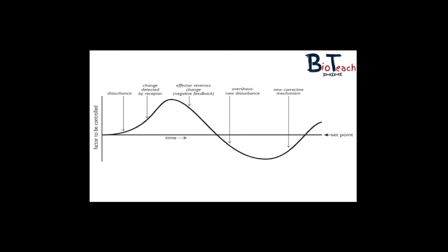The next part of the graph where it goes below the set point would be an example of, say, you woke up and skipped breakfast. This disturbance would essentially be your blood sugar lowering. You can see then that as the blood sugar goes down, it brings about a new corrective mechanism in your body, which we'll talk about in the merit. But essentially the whole point is that it brings it back to the set point.